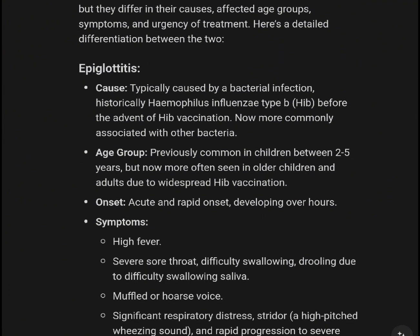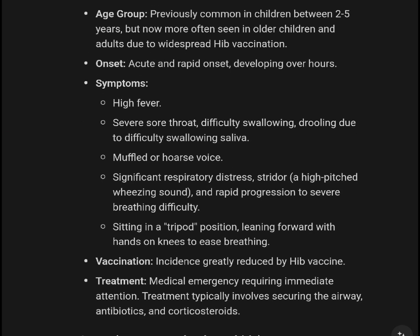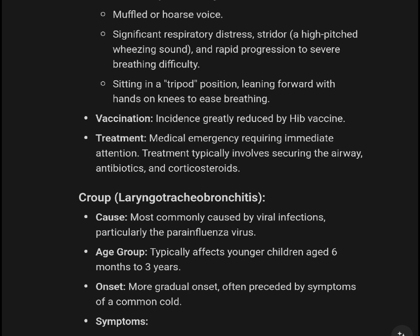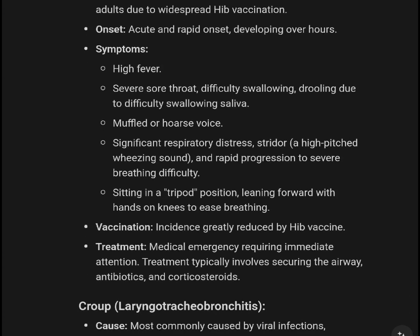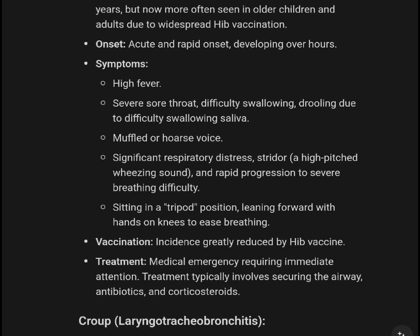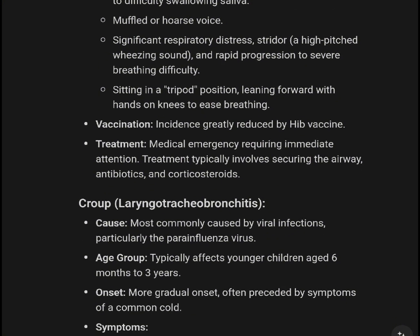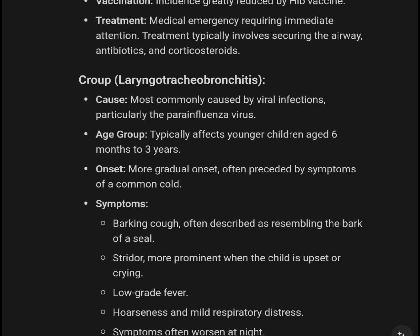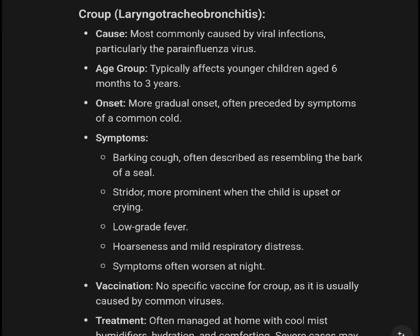Both epiglottitis and Croup are respiratory conditions affecting children. Epiglottitis is caused by Haemophilus influenzae (Hib), affecting the age group 2 to 5 years. Symptoms: high fever, severe sore throat, muffled or hoarse voice, significant risk of airway obstruction, tripod position. Hib vaccine greatly reduces incidence. Onset is acute and rapid, developing over hours. Symptoms include: high fever, severe sore throat, difficulty swallowing, drooling due to difficulty swallowing saliva, muffled or hoarse voice, significant respiratory distress, stridor or high-pitched wheezing, rapid progression to severe breathing difficulties, sitting in tripod position. Treatment: medical emergency requiring immediate attention, securing the airway, antibiotics, and corticosteroids.